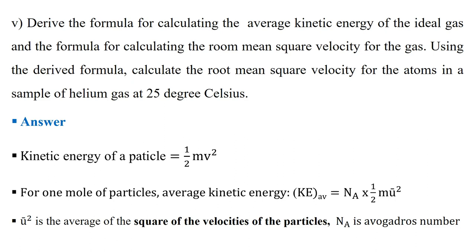Question 5 gives the formula for calculating the average kinetic energy of an ideal gas and the formula for the root mean square velocity. Using the derived formula, calculate the root mean square velocity for atoms in a sample of helium gas at 25 degrees Celsius. We need to derive two formulas: the average kinetic energy of an ideal gas and the root mean square velocity.